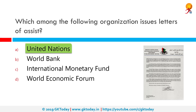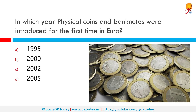Which among the following organizations issues Letters of Assist? This is done by the United Nations. Letters of Assist refers to a contractual document issued by the United Nations to a government, authorizing it to provide goods and services to a peacekeeping or other UN operation.